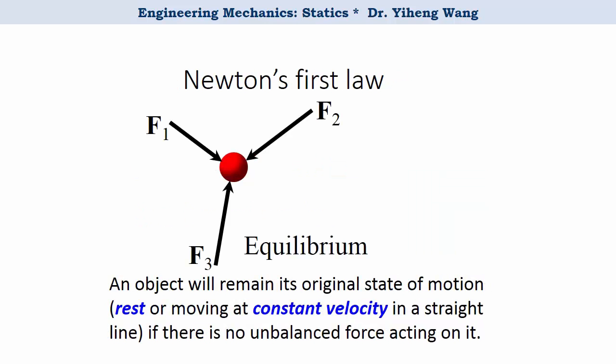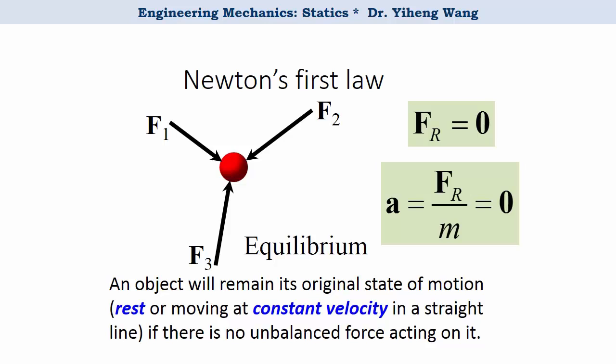As a special case of Newton's second law, when the resultant force acting on the object is zero — that is, there is no unbalanced force — then according to Newton's second law, the acceleration is also zero, indicating no change in the velocity. We also call it the state of equilibrium. The object either stays motionless or moves with a constant velocity. In this class, most objects that we deal with are at rest.